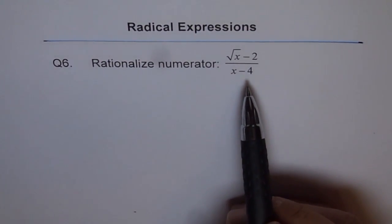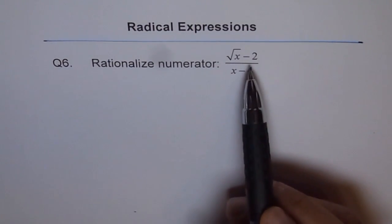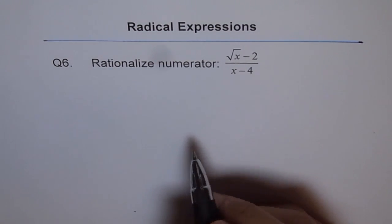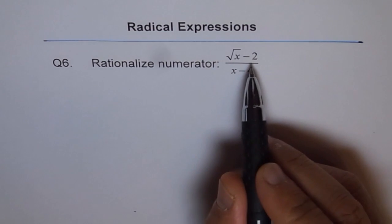To rationalize, we need to multiply and divide by the conjugate of the numerator. Now you can tell me what is the conjugate of this numerator.